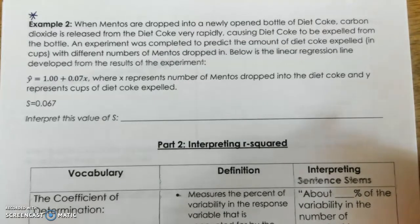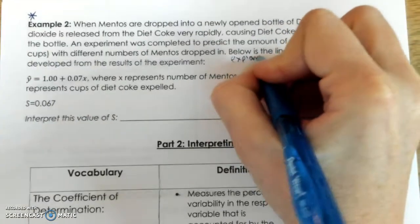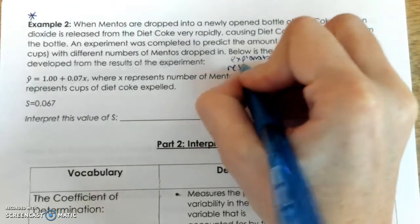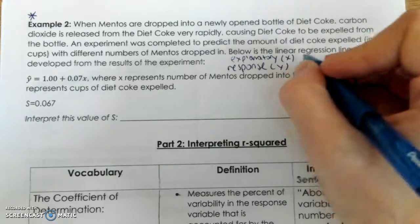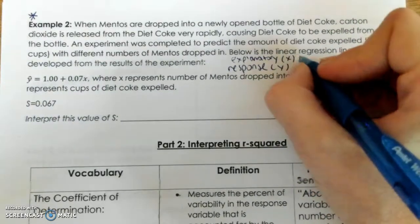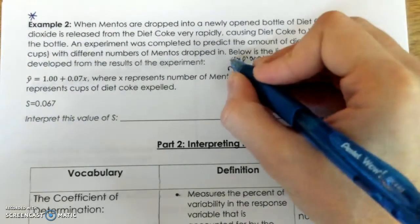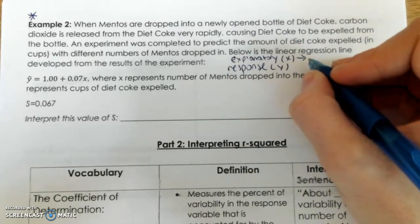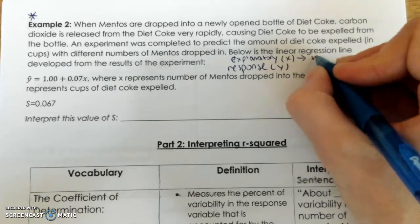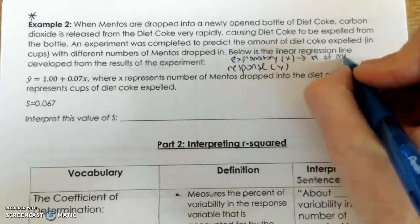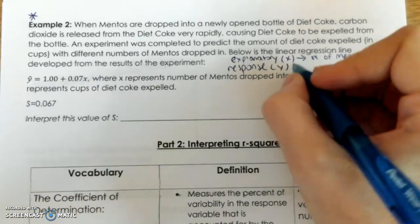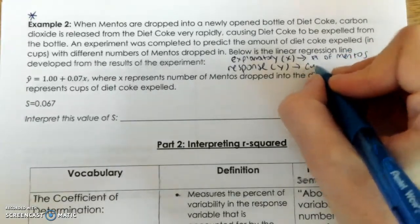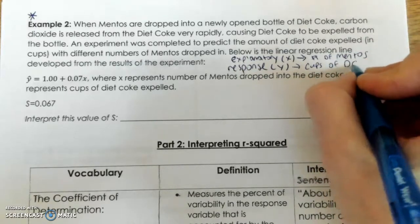So looking at this, before we do anything, let's identify the explanatory and response variables, because we're going to reference back to them. So remember, explanatory is always my X, response is always my Y. And they need to be in numbers, right, units, something. So my explanatory, what I'm testing is my number of Mentos dropped in, right? That explains how much Diet Coke is expelled. So I'm going to say cups of Diet Coke expelled.